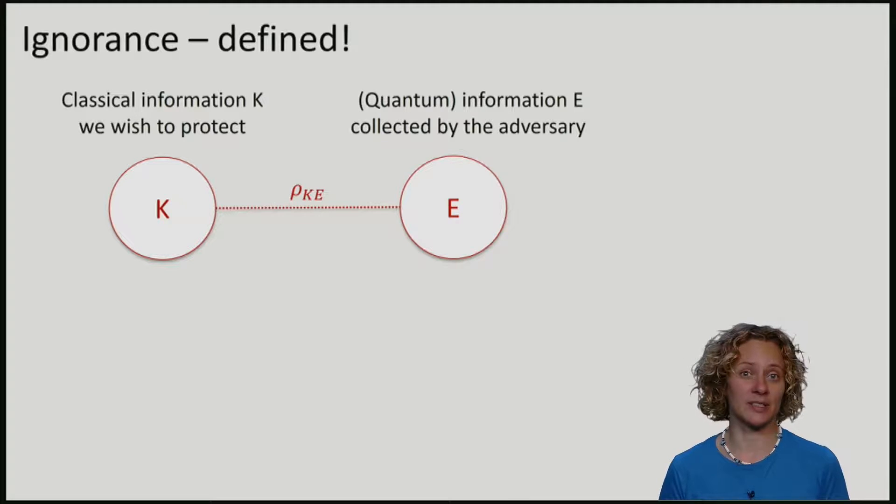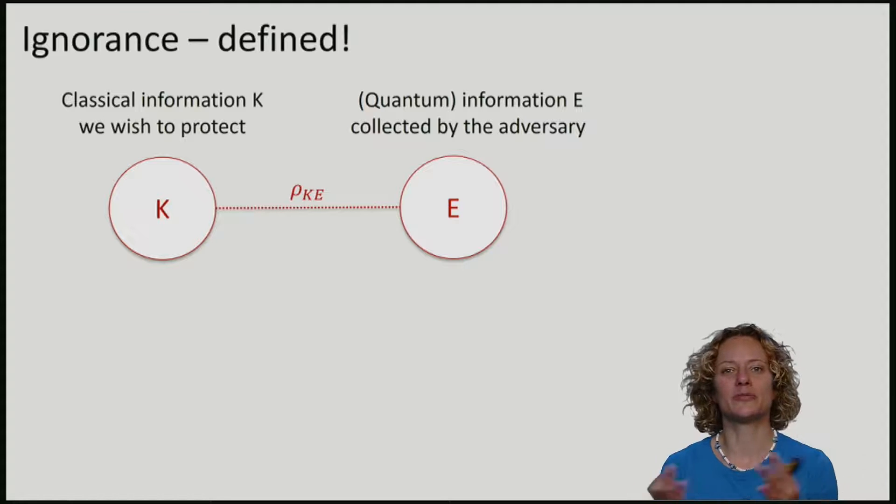E might be something that Eve knows all along ahead of time, or E is some part of the qubits that she intercepted during the communication. E is some quantum memory that contains everything that the adversary knows. We also call E the side information to K.